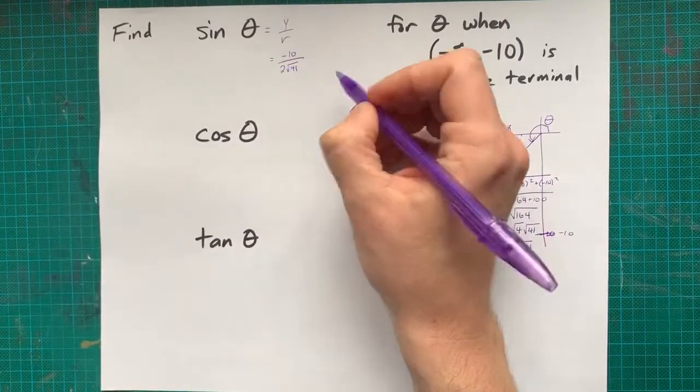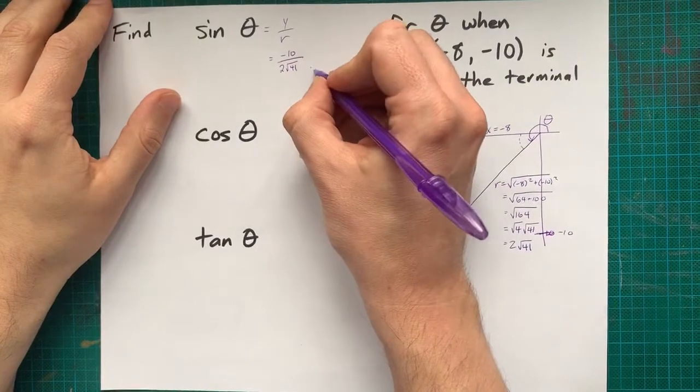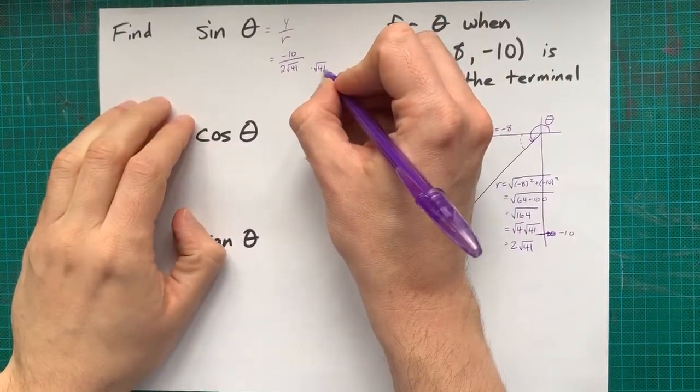Now, that reduces, but also some teachers don't like it when you have a radical on bottom. They want you to rationalize the denominator.